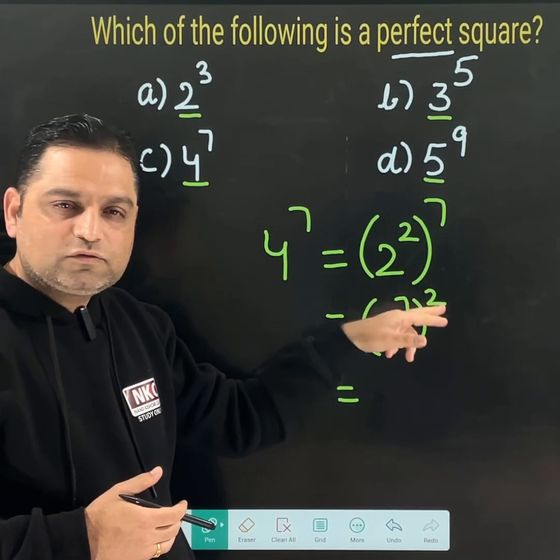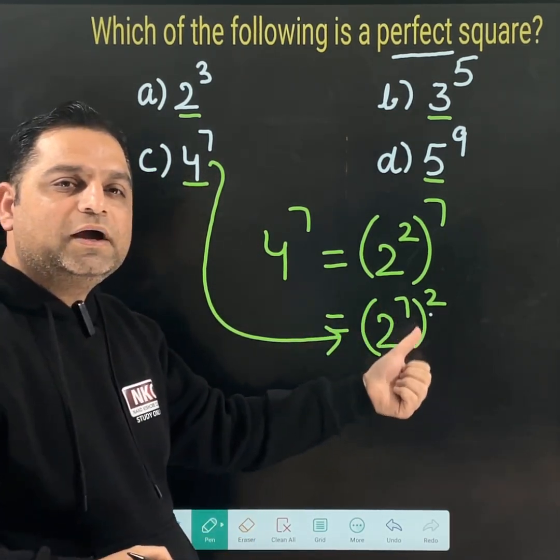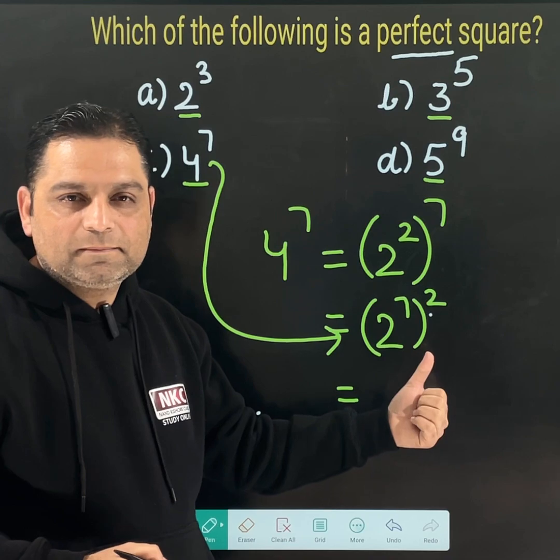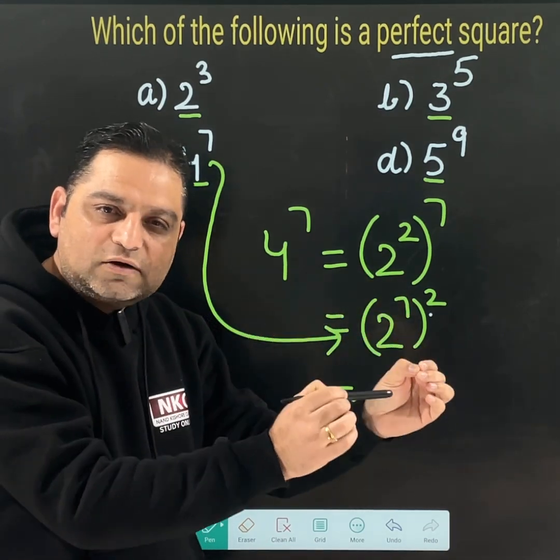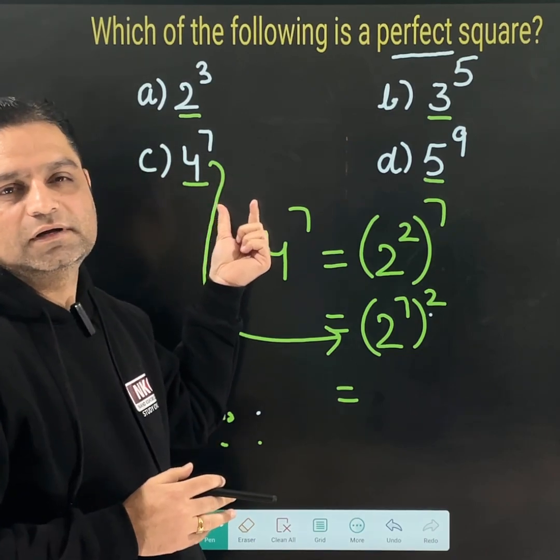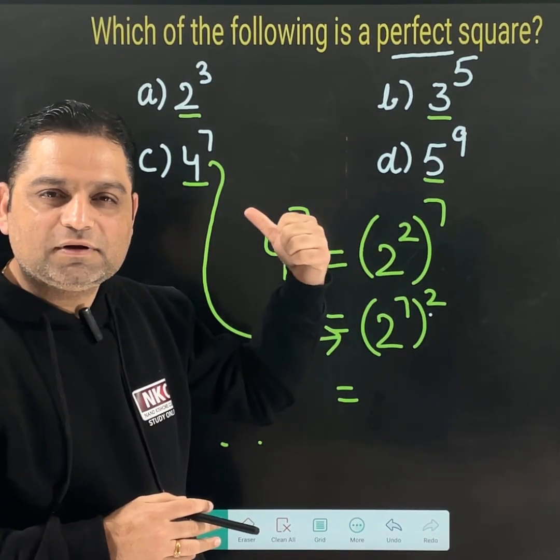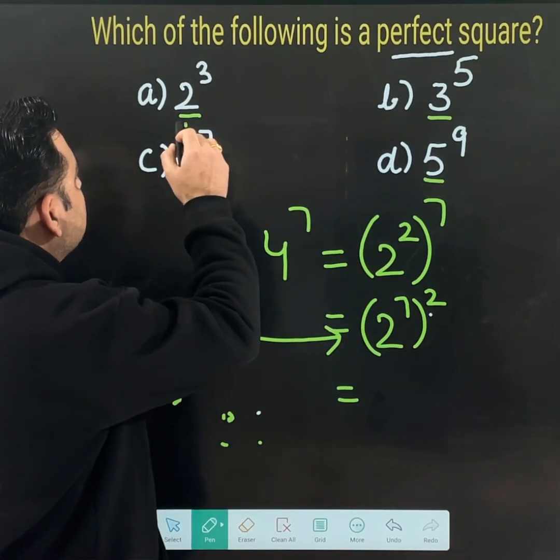If square is there, that means this 4 to the power 7 is being made by squaring 2 to the power 7. If we are doing square of any whole number, that means this number is a perfect square. So, 4 to the power 7 is a perfect square here. This is the correct option.